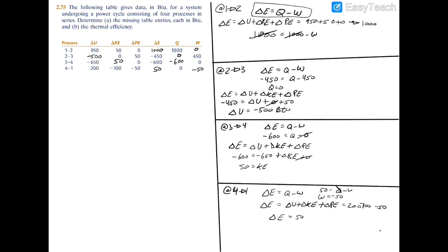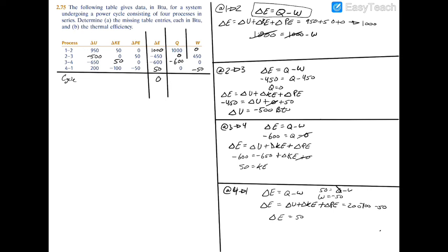Now let's look at the total cycle. Summing the change in energy column: 1000 minus 450 minus 600 plus 50 equals 0. This confirms our work is correct, because a cycle that starts at state 1 and returns to state 1 must have zero net change in energy — delta E equals zero. The total heat transfer and total work both sum to positive 400 BTU.